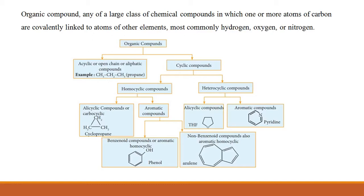Heterocyclic means the cyclic ring system is inserted with a heteroatom — oxygen, sulfur, or nitrogen. These are of two types: alicyclic compounds, which are fully saturated, and aromatic compounds, which are unsaturated. Examples: pyridine (aromatic heterocyclic) and tetrahydrofuran (alicyclic). Homocyclic aromatic compounds include benzenoid compounds such as phenols, and non-benzenoid aromatic homocyclic compounds where two rings are fused with each other. Example of alicyclic is cyclopropane.